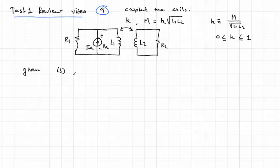I'm sorry, assume given IA, IA of S, find VA of S, the voltage across it.